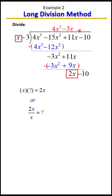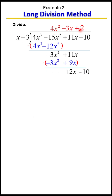We're going to place that 2 above our constant position. Next, we multiply that term with both terms on the outside: 2 times x equals 2x, and 2 times negative 3 equals negative 6.